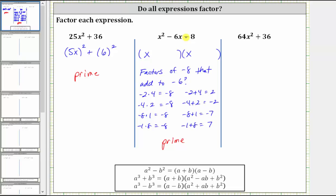The last expression, we have 64x squared plus 36. Notice that 64x squared is a perfect square, and so is 36. So we do have a sum of squares, but this is not the correct strategy. Remember, the first step is always to factor out the greatest common factor. And the greatest common factor between 64x squared and 36 is four.